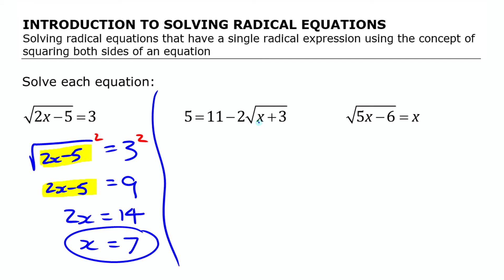To do that, probably the simplest way, since this term is negative, I'm actually going to move this whole term to the other side and make it positive. And I'm going to move the 5 to the other side, and it'll be 11 minus 5, or in other words, 6. Now I have 2 square root x plus 3 is 6.